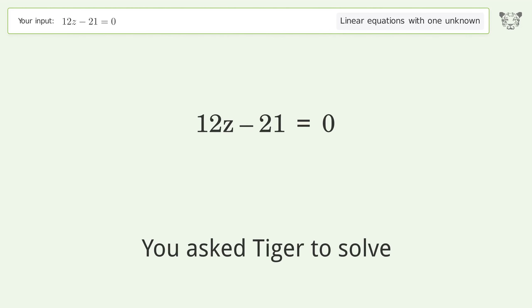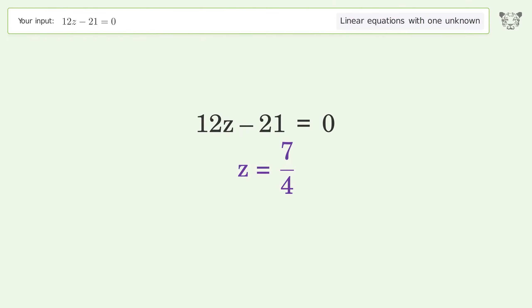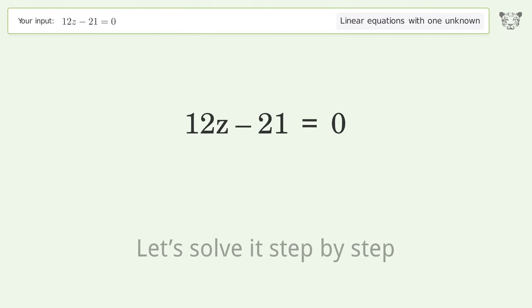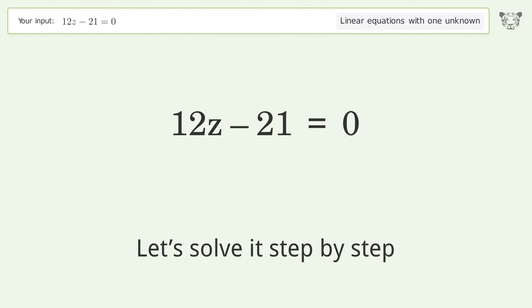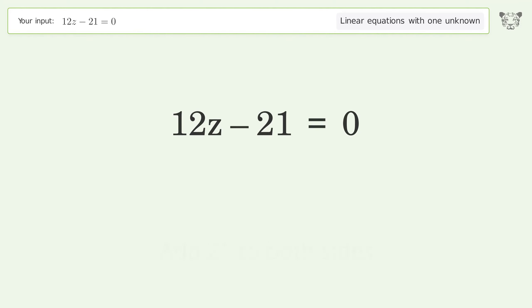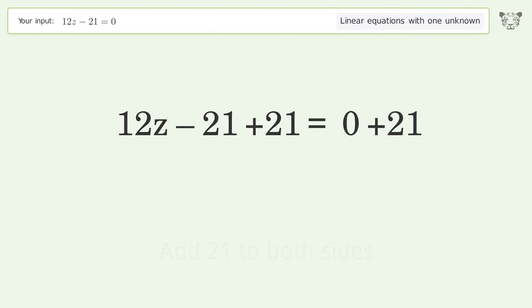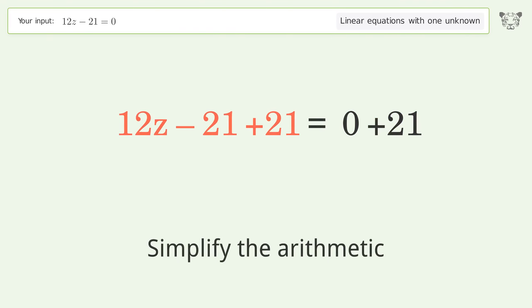Tiger solves this linear equation with one unknown. The final result is z equals 7 over 4. Let's solve it step by step: group all constants on the right side of the equation, add 21 to both sides, and simplify the arithmetic.